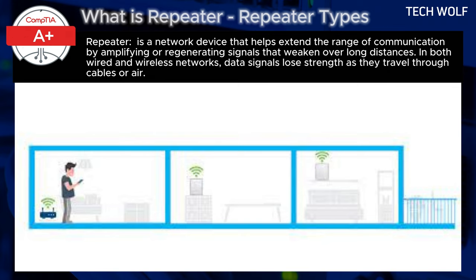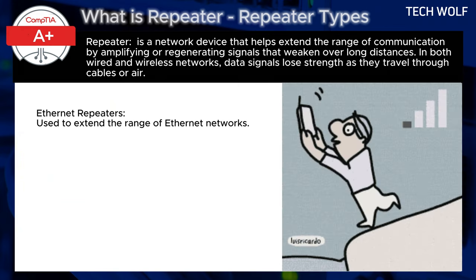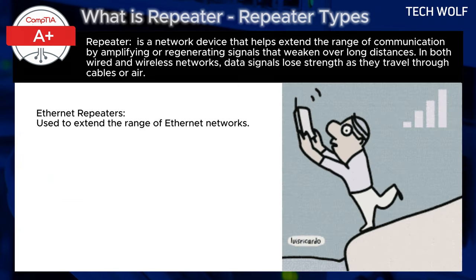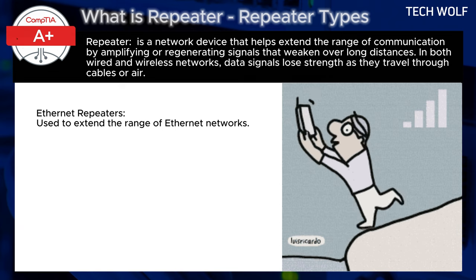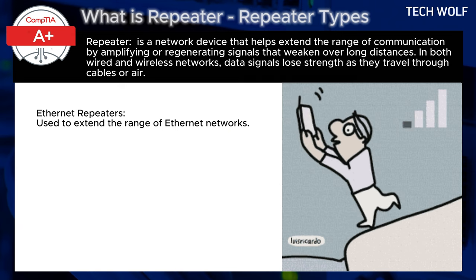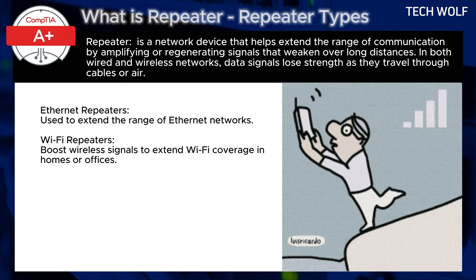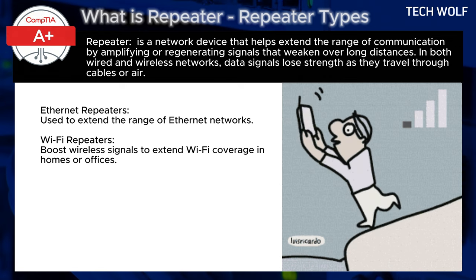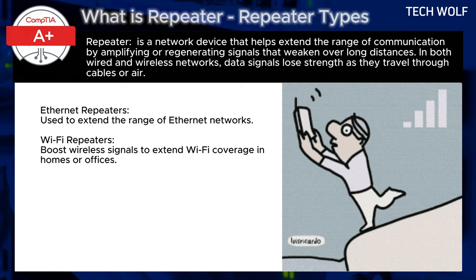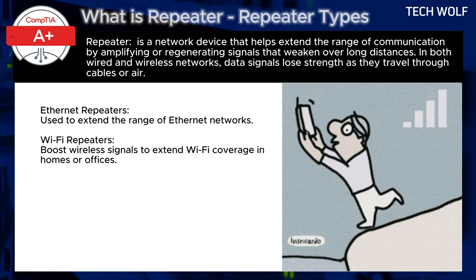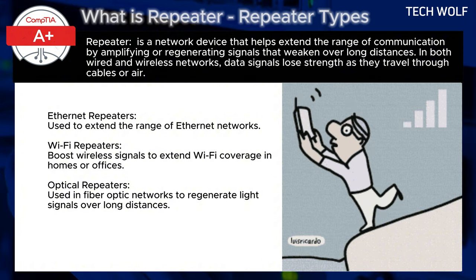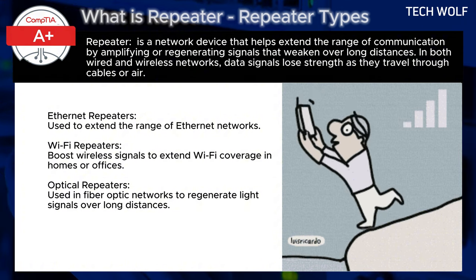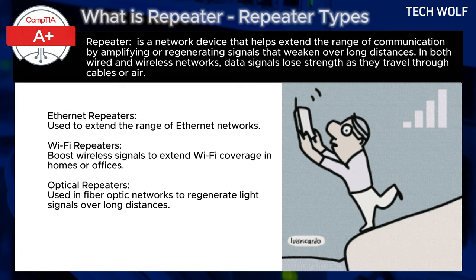There are three types of repeaters. Ethernet repeaters are used to extend the range of Ethernet networks. Wi-Fi repeaters boost wireless signals to extend Wi-Fi coverage in homes or offices. And optical repeaters are used in fiber optics to regenerate light signals over long distances.